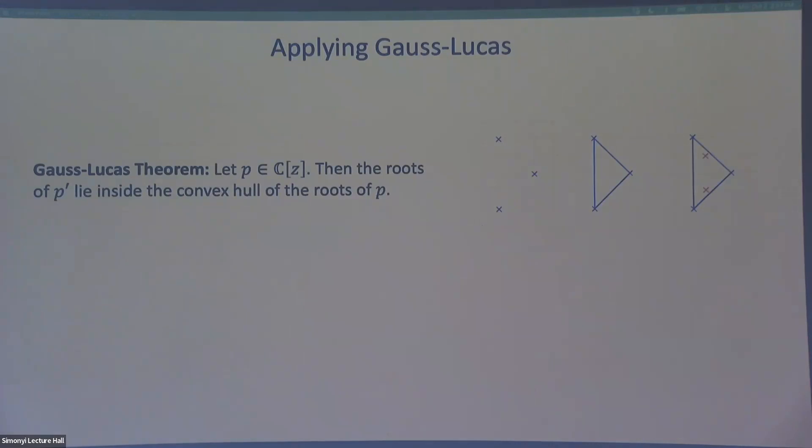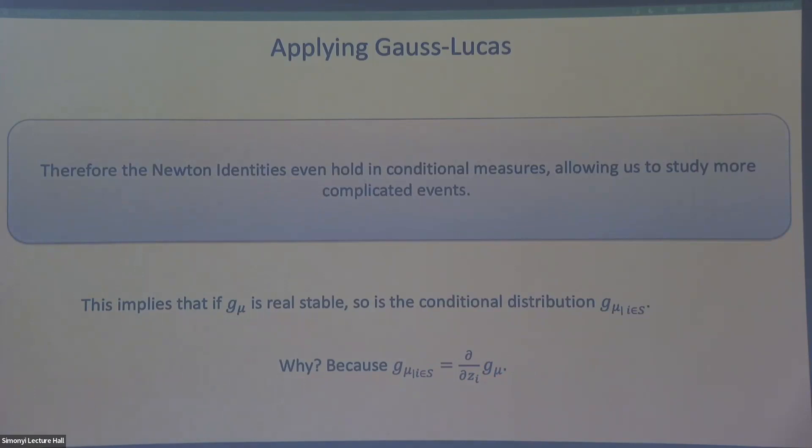Let's look at now Gauss-Lucas. Why is this useful? It tells us that if you have a real stable distribution with a real stable generating polynomial, then the generating polynomial of the conditional distribution, which I condition some element to be in the output, to i being in the output, is also real stable. Why? Well, if you look at the generating polynomial of this conditional distribution, it's actually just the generating polynomial of mu differentiated with respect to zi. And then with just one minute of work, you can apply Gauss-Lucas and say that as long as your original polynomial is real stable, so is this derivative. And so this lets me say that actually the Newton identities also hold on conditional measures, which allows us to think about much more complicated events, right? And I can condition on some variables and then still have concentration.